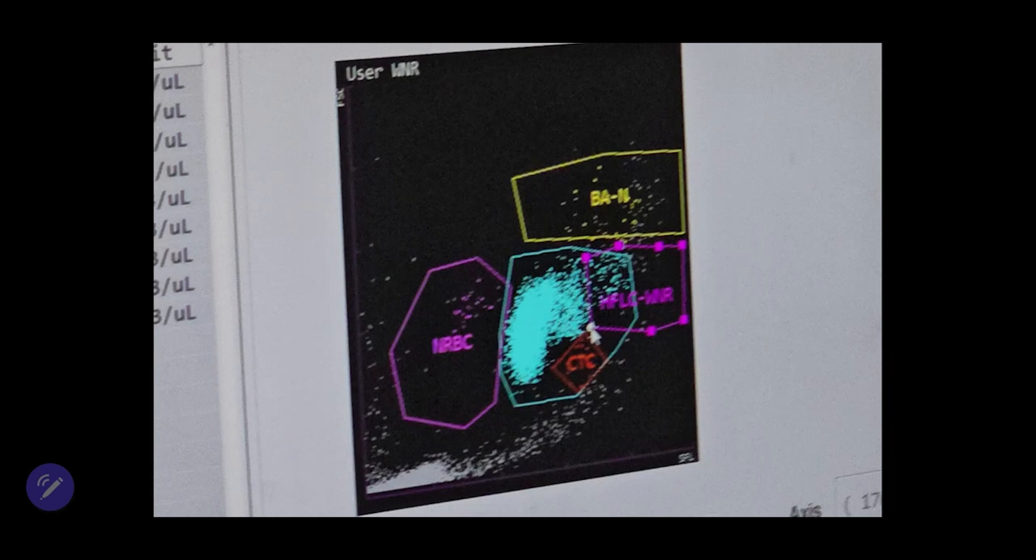This is a criterion we established ourselves. In the far left section, you'll see a pink area labeled NRBC. The greenish-blue area represents the white blood cells we mentioned should form an L shape.